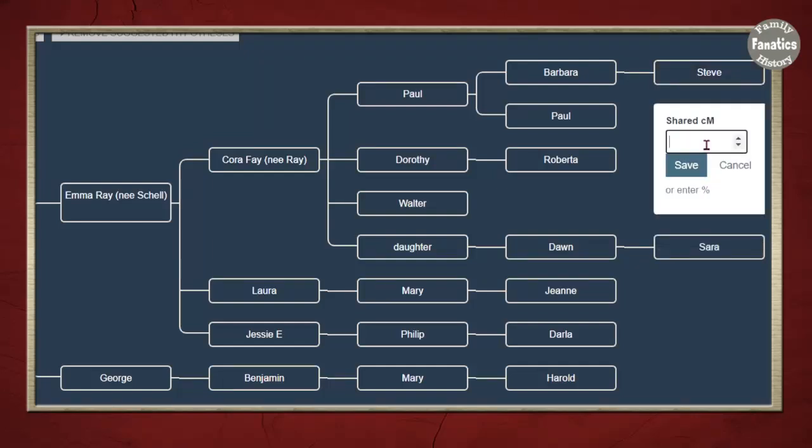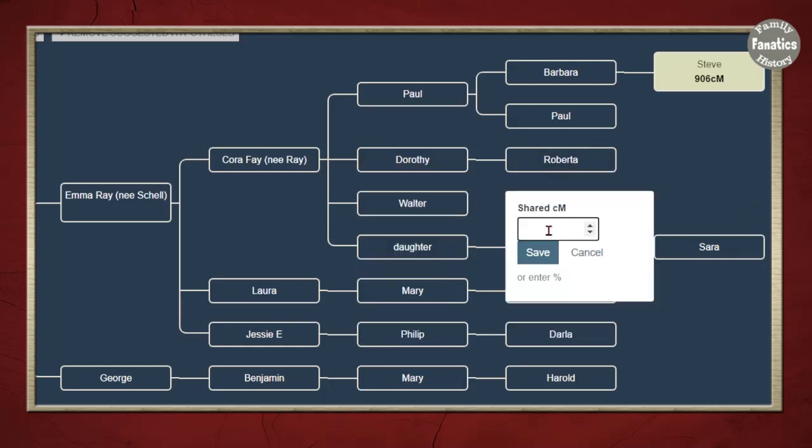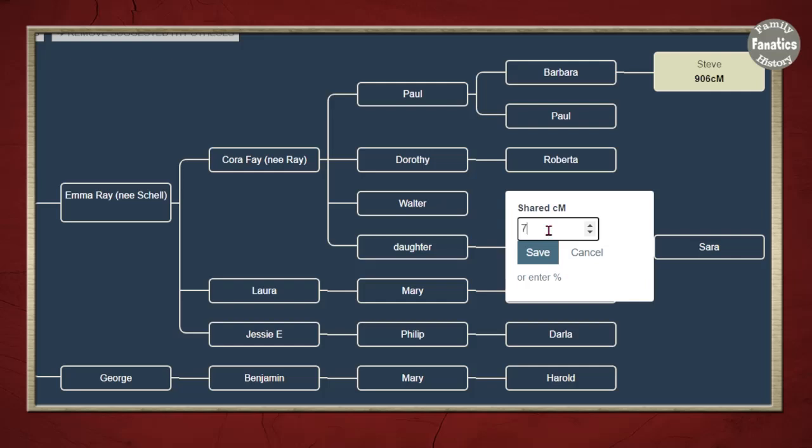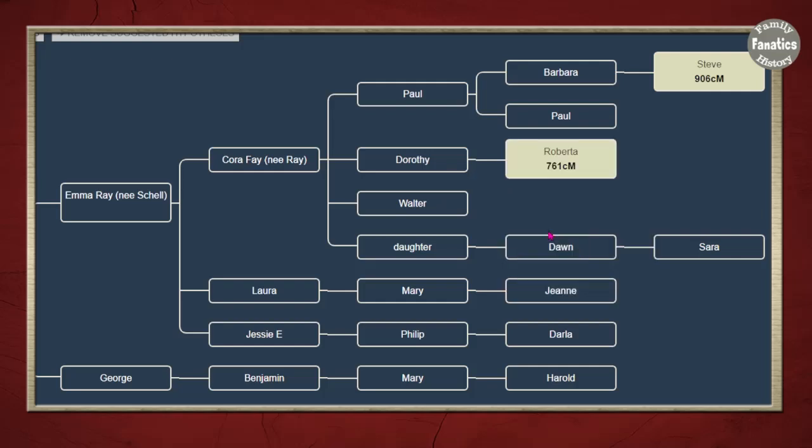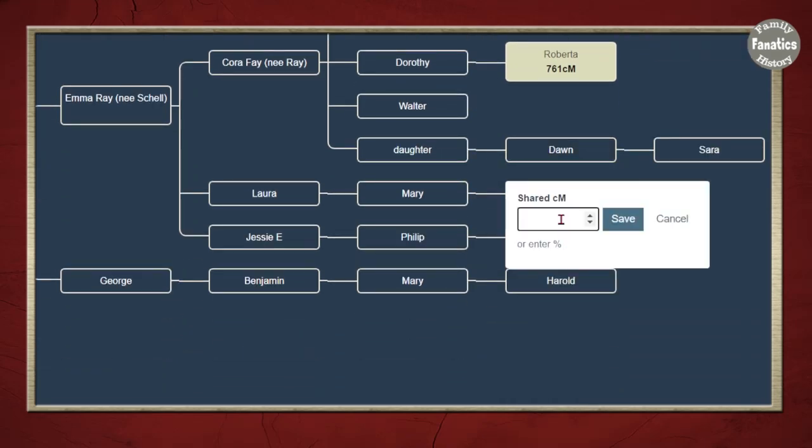Next what we want to do is add the shared centimorgans for each one of these people. This amount of shared centimorgans can come from any of the websites. The key here though is you are looking for the amount of shared centimorgans with each one of these people to your target person.